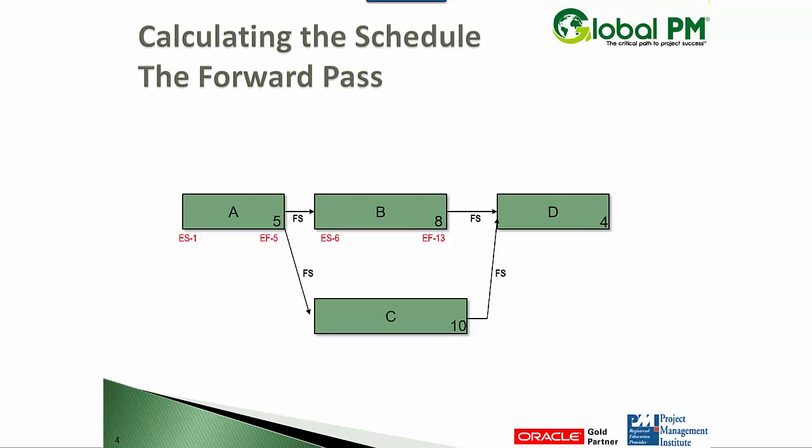Immediately after A finishes at five, B starts at six and finishes at 13. C also starts at day six, but because its duration is two days longer than B's, its finish is day 15. Both B and C have to finish before D can start. So the earliest D can start, the ES, the earliest start, is going to be 16.